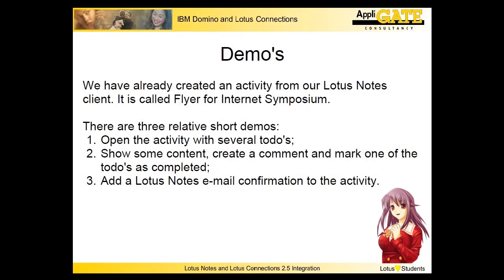We will demonstrate this capability in this demo. We have already created an activity. The objective of the activity is to create a flyer to promote our Lotus Connections 2.5 workshop. The activity consists of five to-dos: create text for the flyer, then check the text, create the flyer and check it, and finally produce the PDF for the printing company. The activity is created with the aid of the sidebar plugin called Connections.